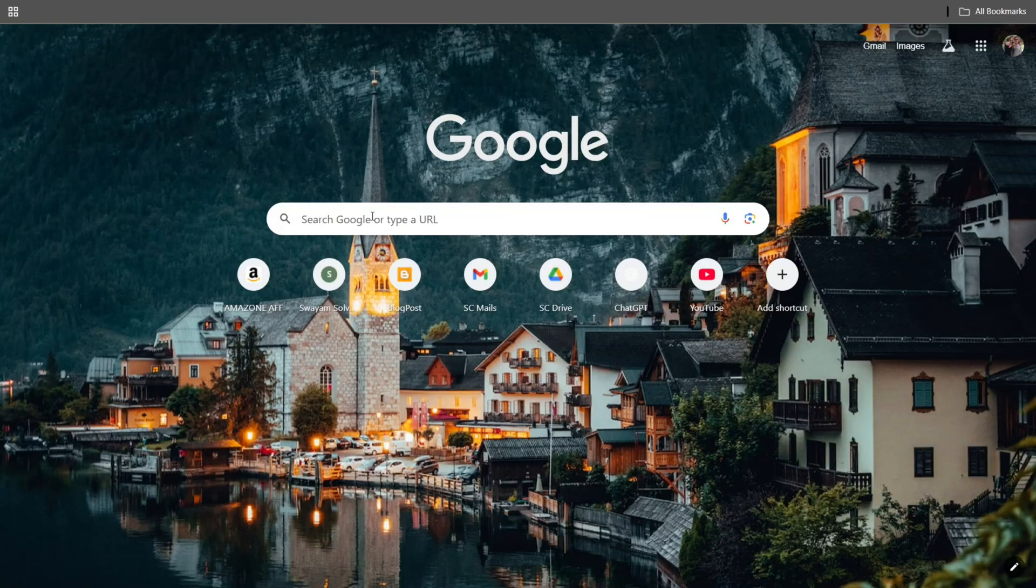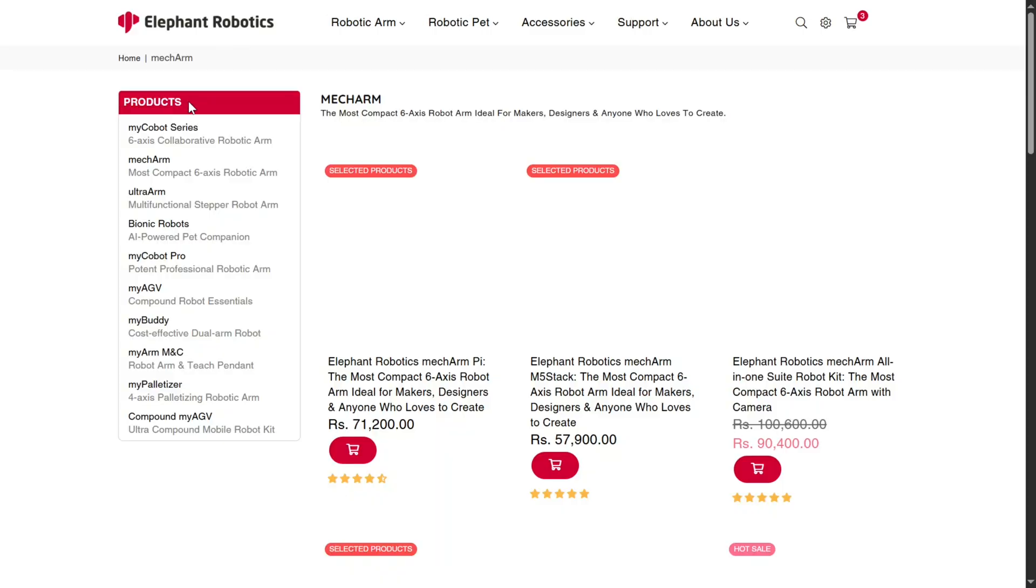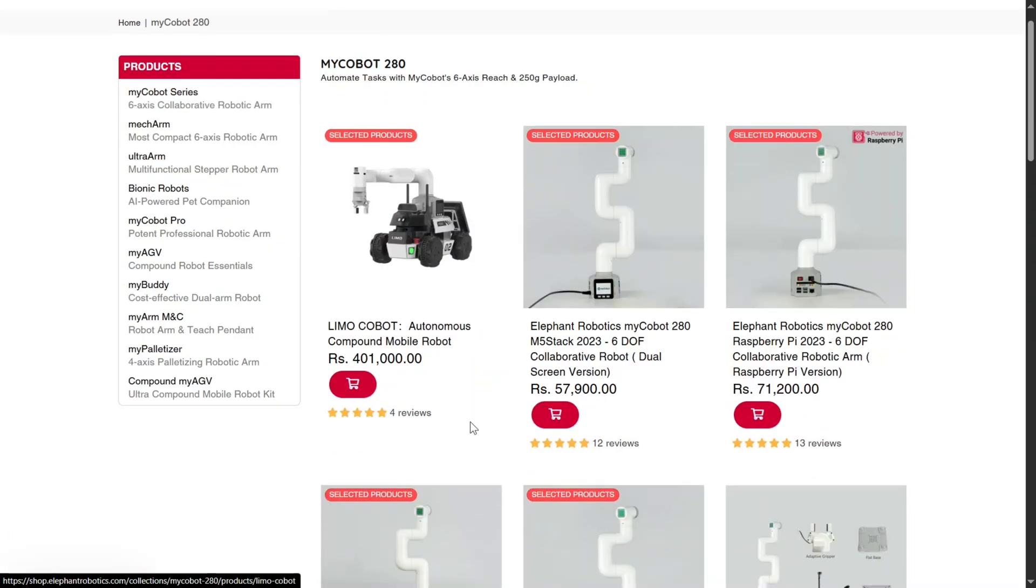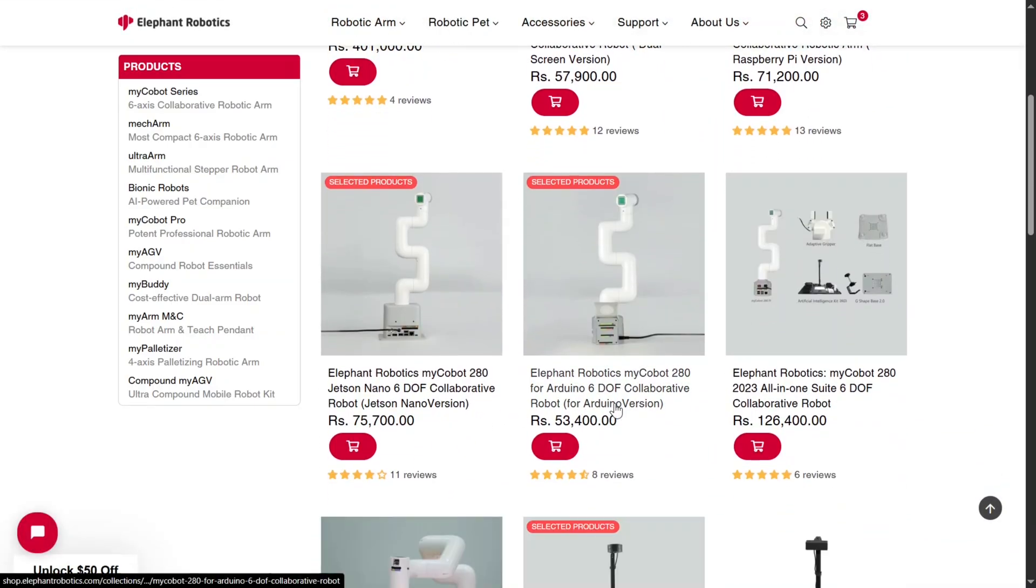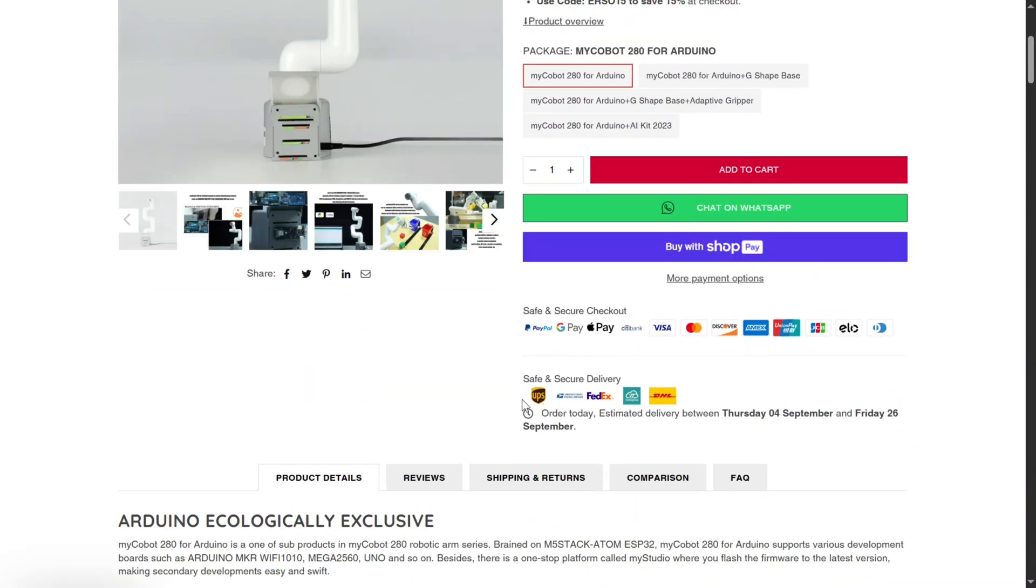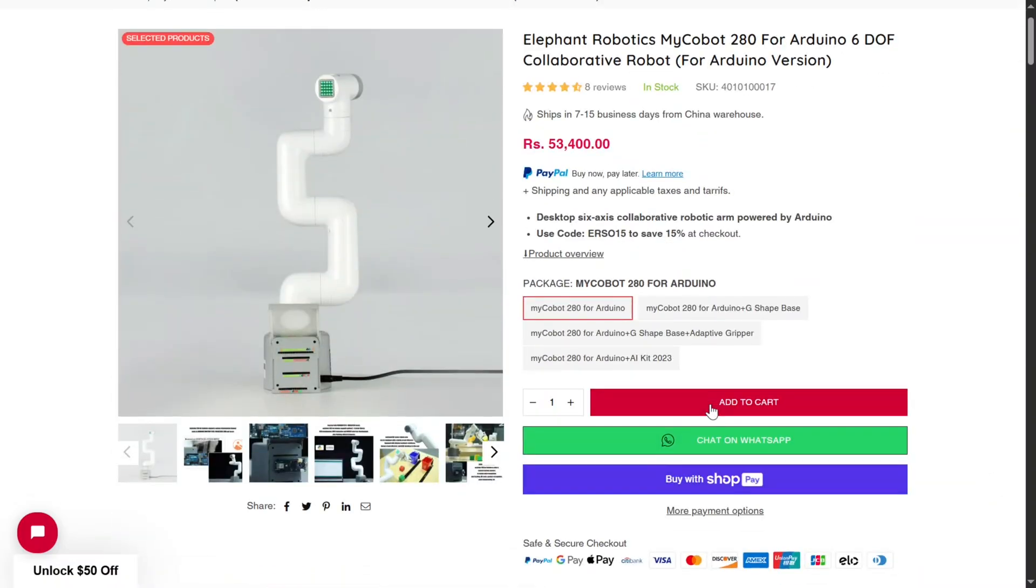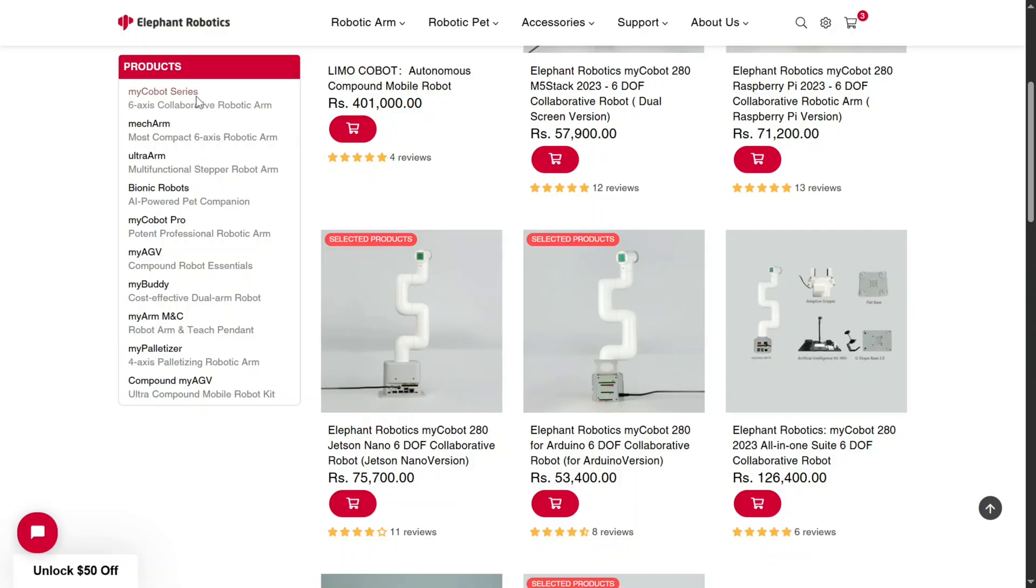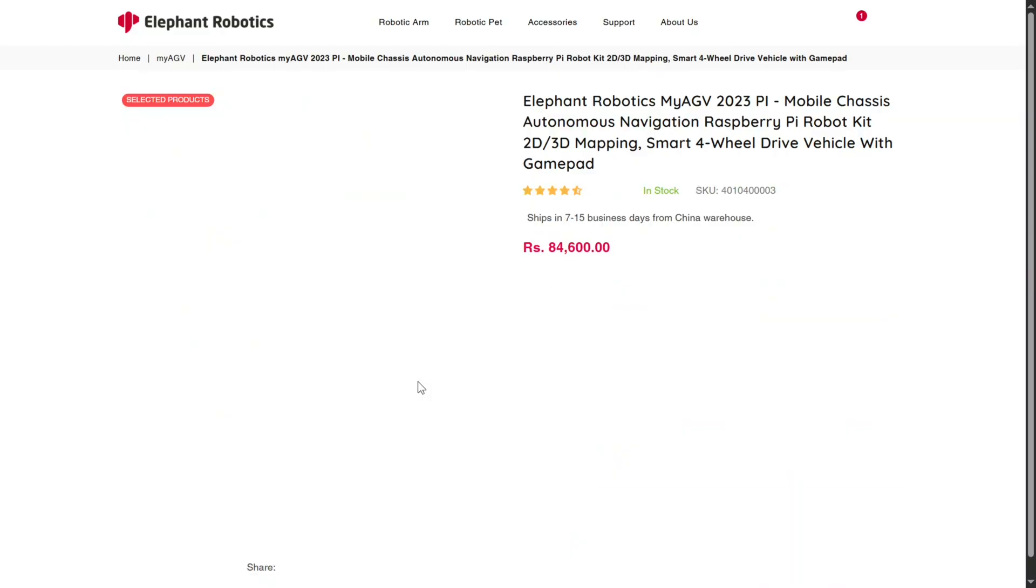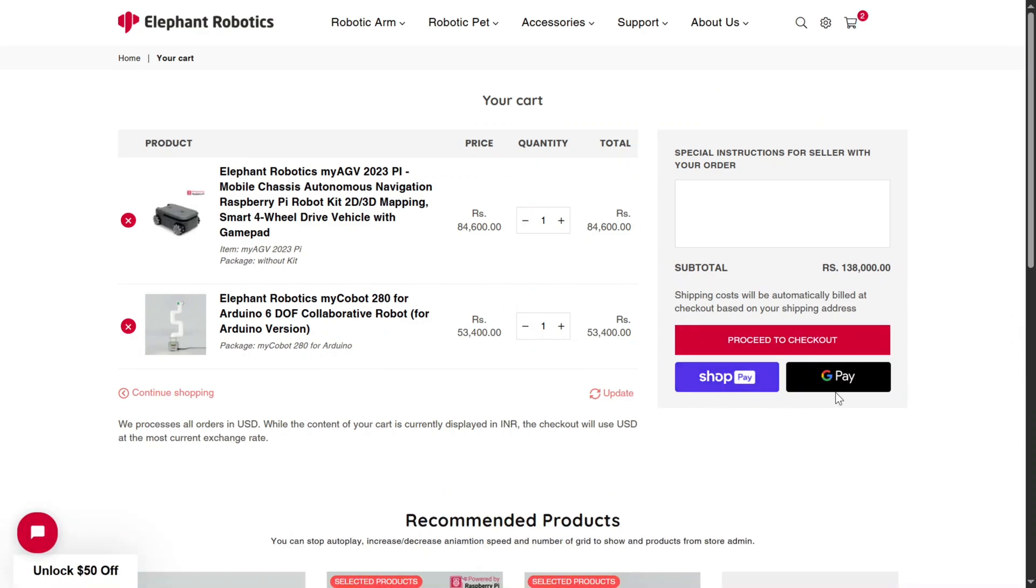If you want to buy these both robots, just open your browser and type elephantrobotics.com or click the link I have provided in the description. In the product section, select the MyCobot series, then click on MyCobot Arduino. They have safe and secure checkout with a wide range of delivery options. I have already shown the details in the previous videos. Then click on add to cart. Now go back to the main page, select MyAGV, then click on MyAGV Pi and add it to your cart as well. After that, you can proceed with the delivery and payment options.